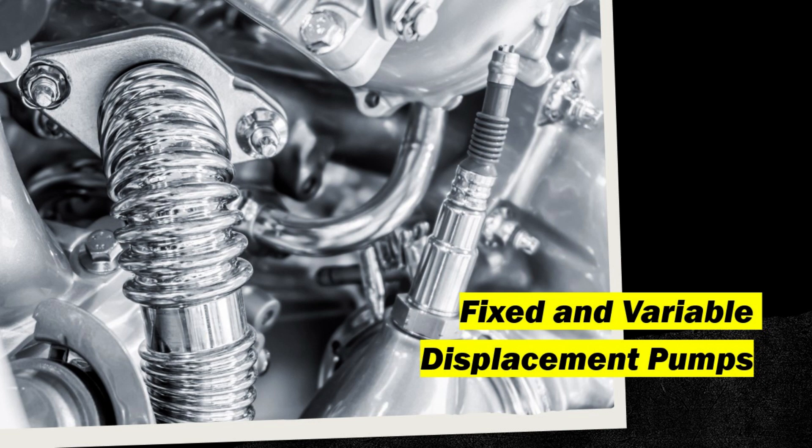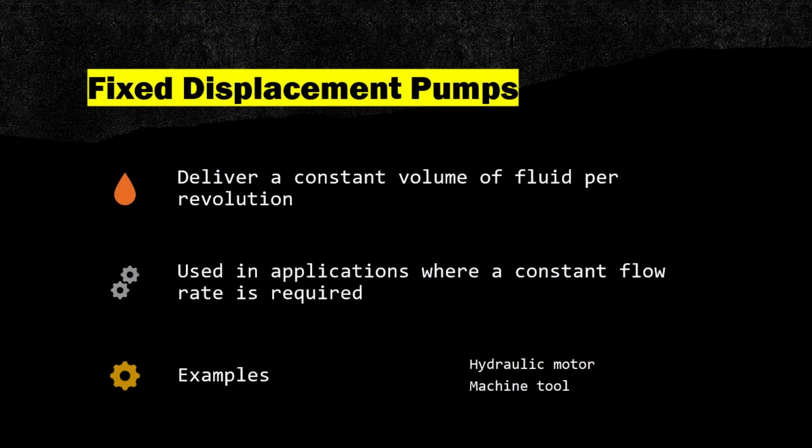Fixed and variable displacement pumps. Fixed displacement pumps deliver a constant volume of fluid per revolution, and are used in applications where a constant flow rate is required.